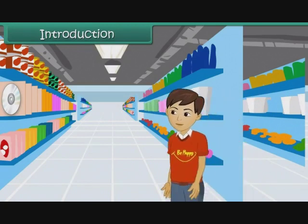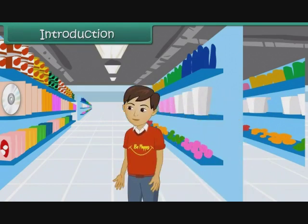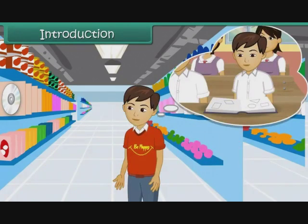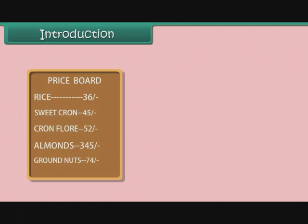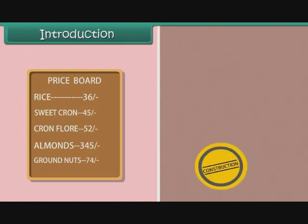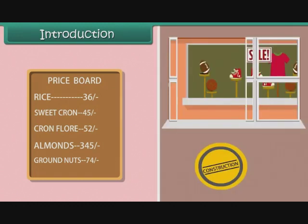Introduction. John was at a shopping mall today. At school he had learned about various shapes. He looked around and saw various shapes in the objects around him. He saw a rectangle billboard, a circle logo, and a rectangle window. Come let's learn more about shapes.